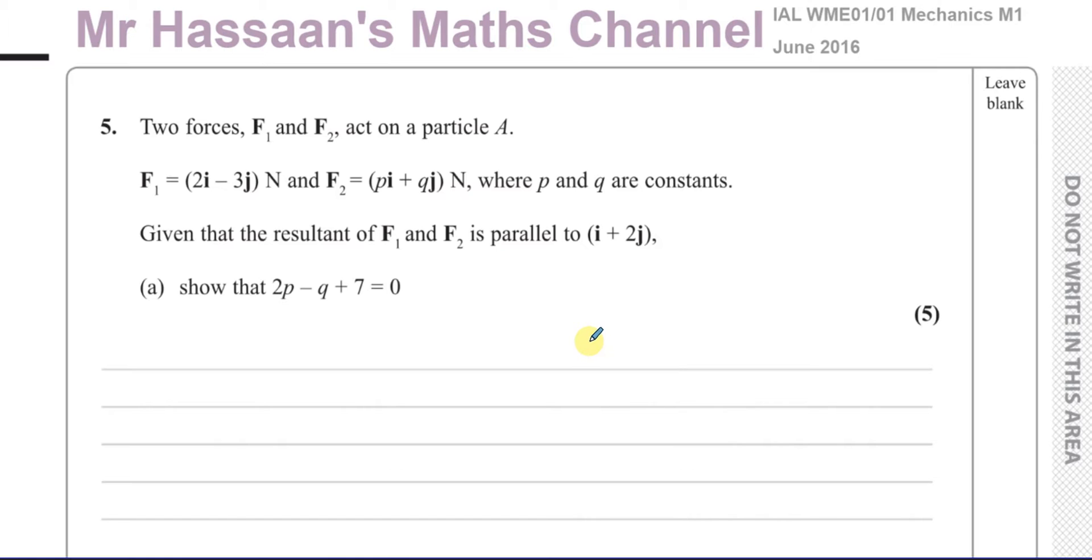This question is about forces and vectors. It says two forces F1 and F2 act on a particle A. F1 is 2I minus 3J Newtons, so I like to always write my vectors as column vectors (2, -3). And F2 is PI plus QJ Newtons, where P and Q are constants.